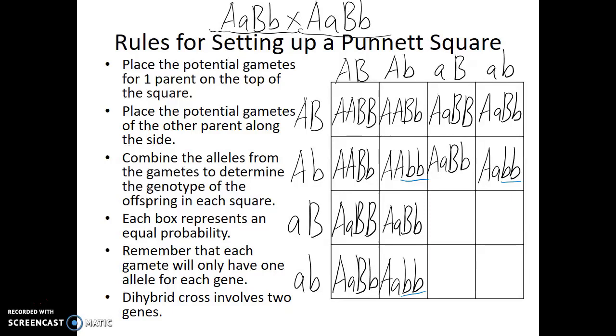Now when we look at the third row, third column, we get little a, little a, capital B, capital B. In this case, we're dominant for the B gene but recessive for the A gene. In fact, we'll see this a few more times.